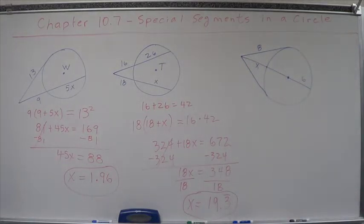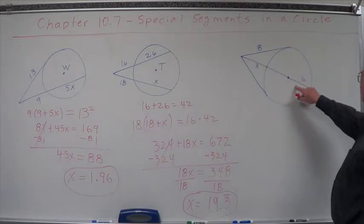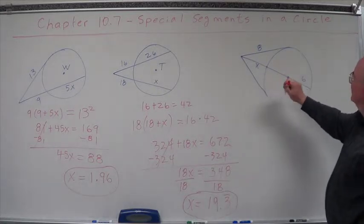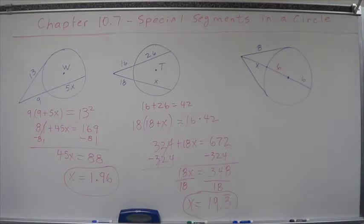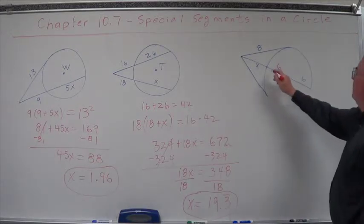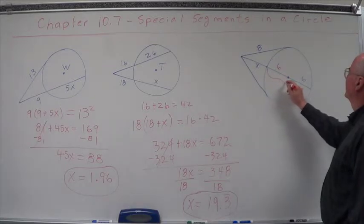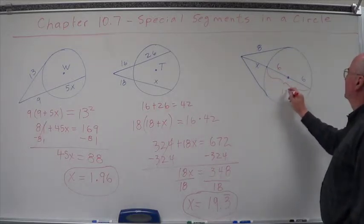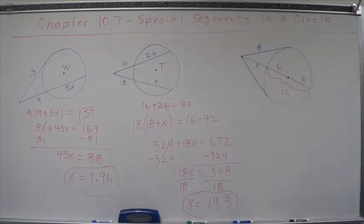Now let's look at this one. A couple things we need to know. This is a radius. Well so is this, right? So that means that's got to be 6. And this whole thing here is 12.